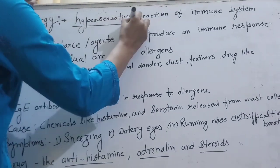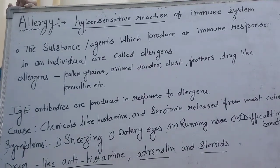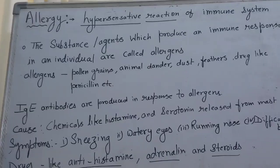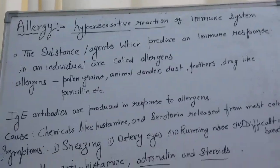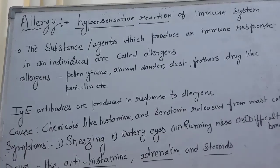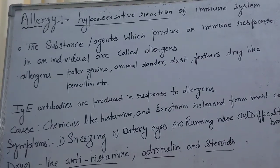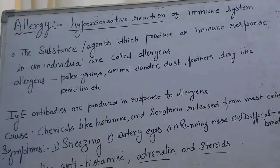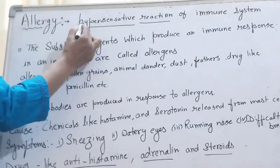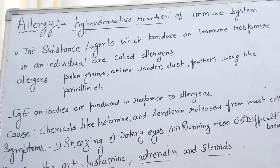There is a hypersensitive reaction of the immune system. If the person is more sensitive — we can say this is a very sensitive person, very quickly they react. So what is that? The sensitivity is more. So if it is more, we use the word 'hyper' — hypersensitive reaction of the immune system.